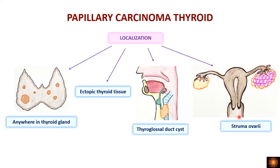Another important site is struma ovarii, which is a germ cell tumor — a type of monodermal teratoma — in which the ovarian tumor contains only thyroid follicles. Papillary carcinoma of the thyroid can also develop from these follicles. So papillary carcinoma can occur in the thyroid gland itself, in ectopic thyroid tissue, in a thyroglossal duct cyst, or in struma ovarii.